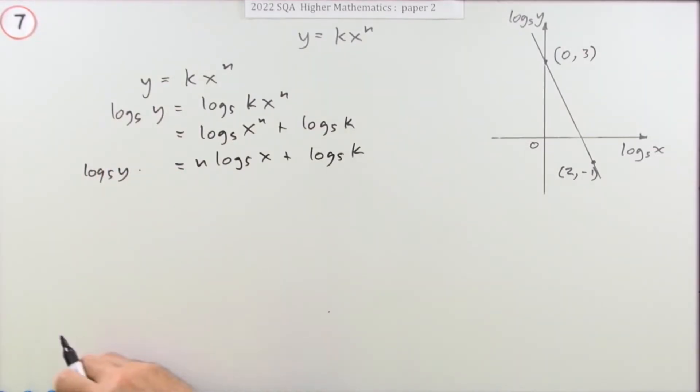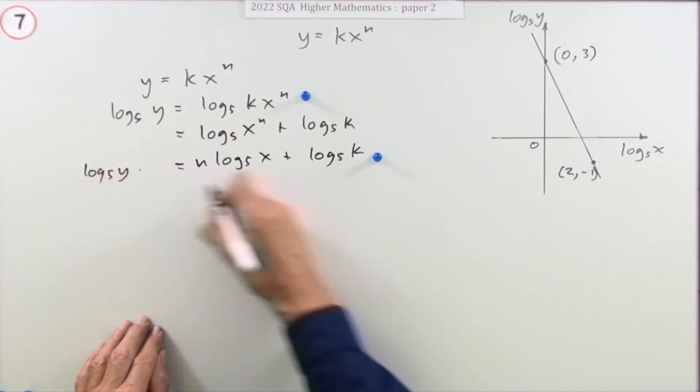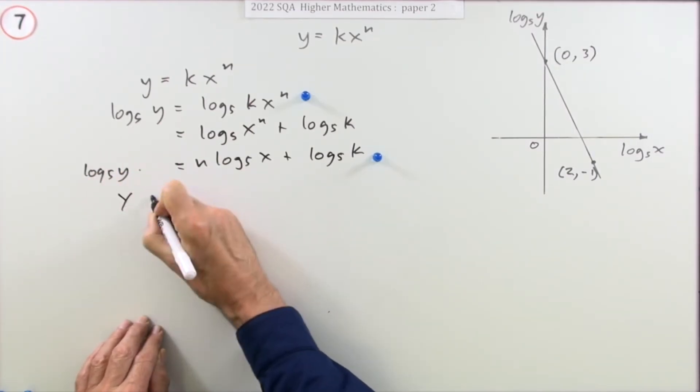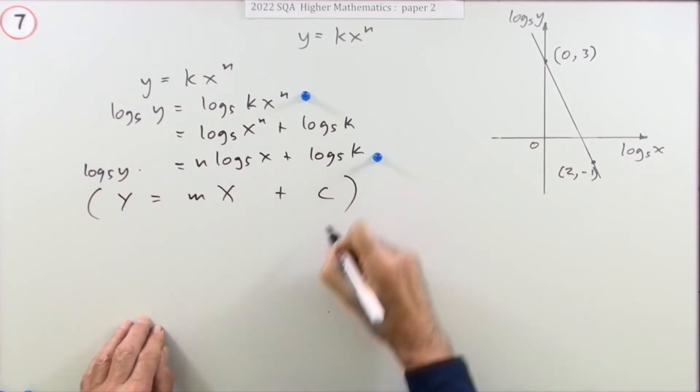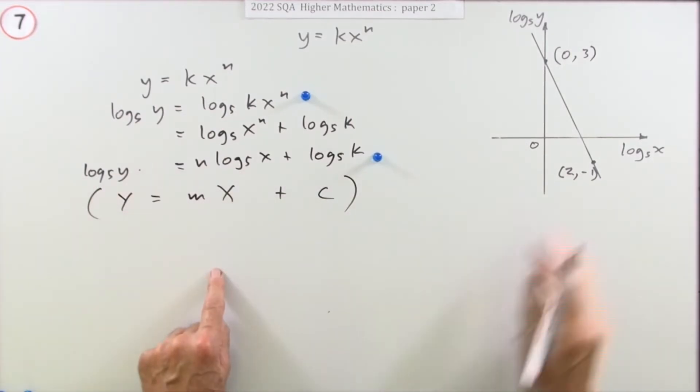Now, if you're doing it this way, the first mark would be introducing the logs. The next mark would come when you expand it all out. Now, this part here now looks like the equation of a line. It looks like y equals m x plus c. So you can compare the parts with the line. Now, the gradient of that line.